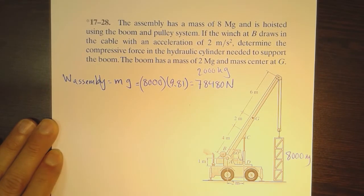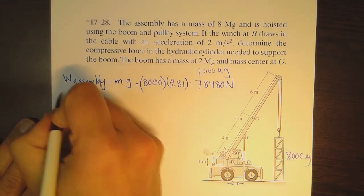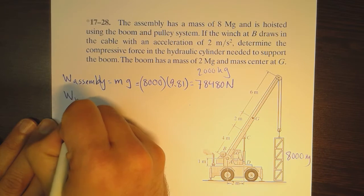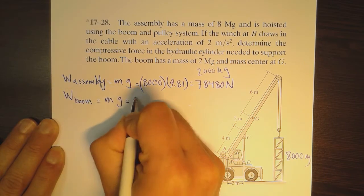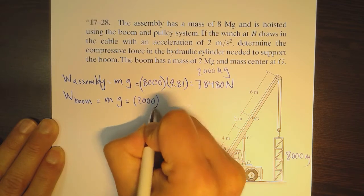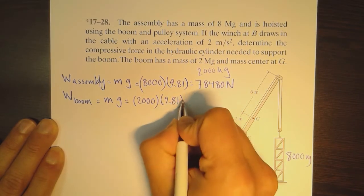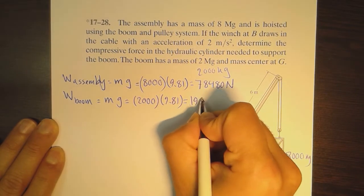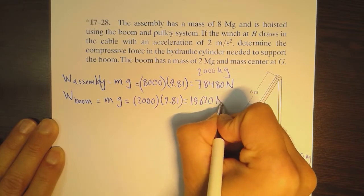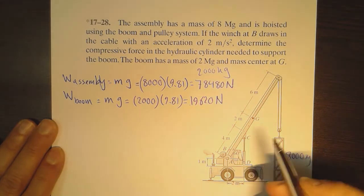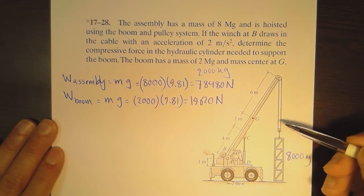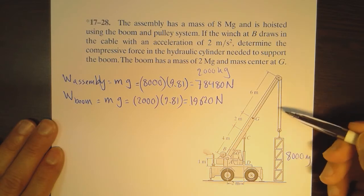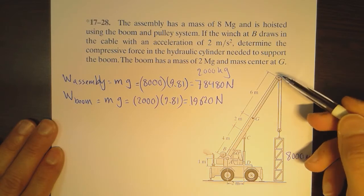The weight of the boom is equal to m times g again: two thousand kilograms times 9.81, which equals 19,620 newtons. We have now calculated the two weights in the system.